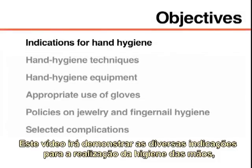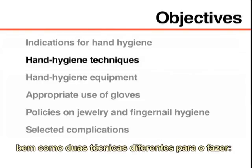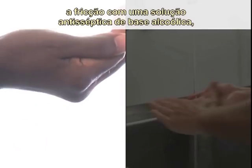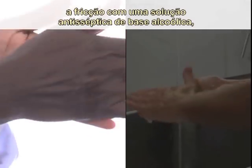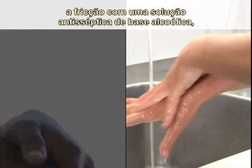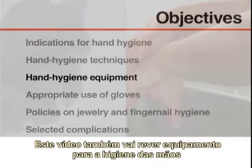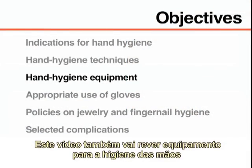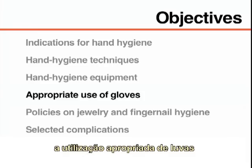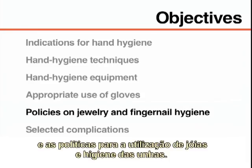This video will demonstrate the various indications to perform hand hygiene as well as two different hand hygiene techniques: hand rubbing with an alcohol-based hand rub formulation and hand washing with soap and water. This video will also review hand hygiene equipment, the appropriate use of gloves,